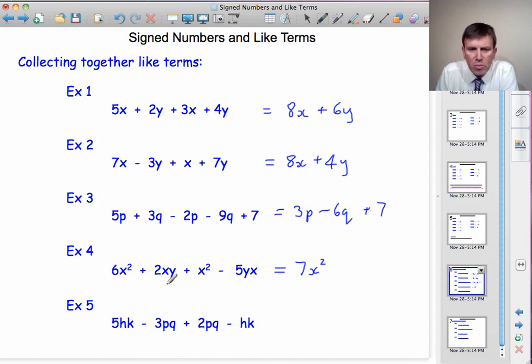So this is the one exception where we can collect them together. And we'll just call them xy's. So we've got plus 2 of them, minus 5 of them, which is minus 3 of them. So it's minus 3xy. And I could have written minus 3yx. But that's the only time you can collect different combinations of letters when essentially they're the same combination in a different order.